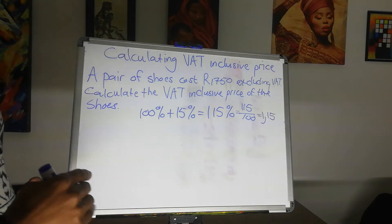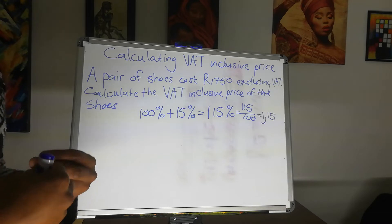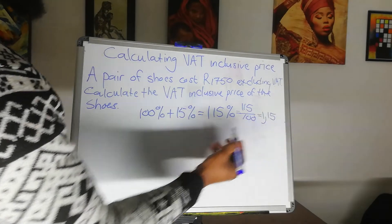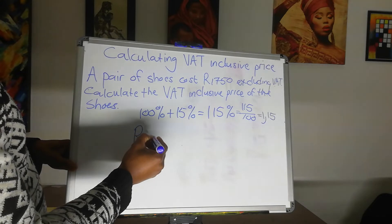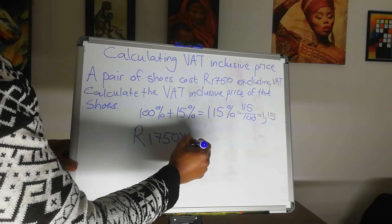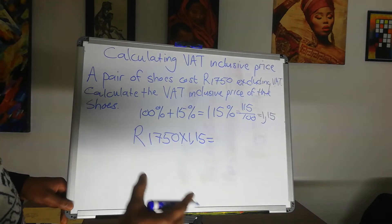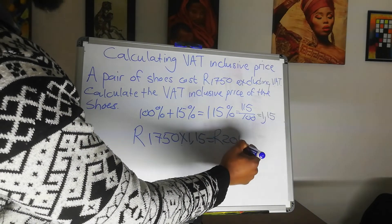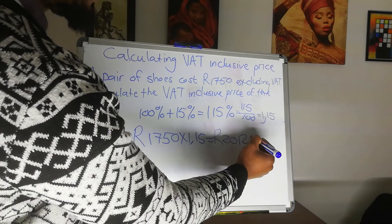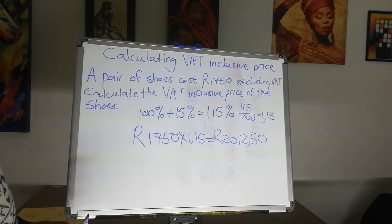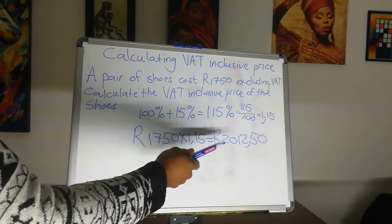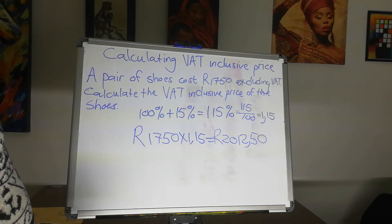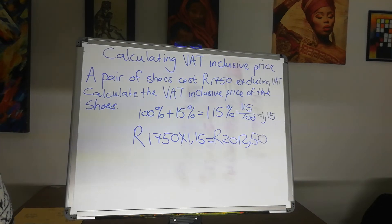When we increase values we can either add or multiply — in this case we are going to multiply. So now you use your 1.15 and you say 1,750 times 1.15. The answer that we get must be more than the value that was given to us, and this gives us 2,012.50. We see that the value did increase from 1,750 to 2,012.50 — and that is how you calculate the VAT-inclusive amount.